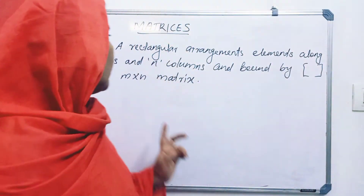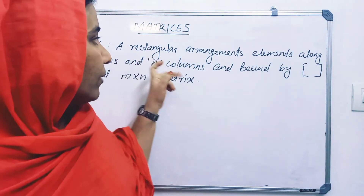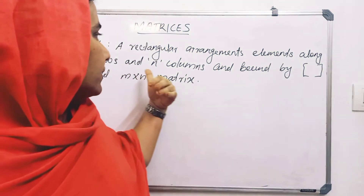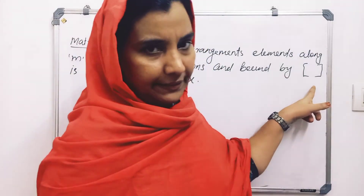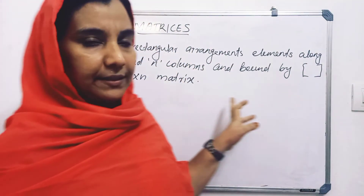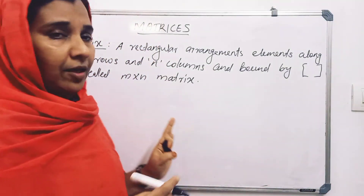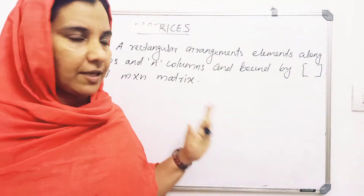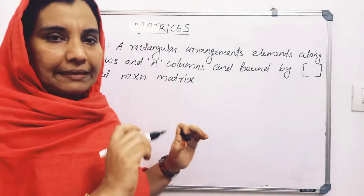Matrices are rectangular arrangements of elements along rows and columns, bounded by brackets. A square bracket arrangement is called an M by N matrix. Elements can be numbers, alphabets, functions, etc., arranged in a rectangular shape.